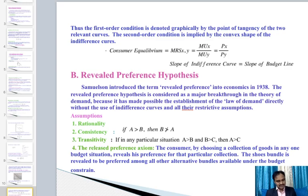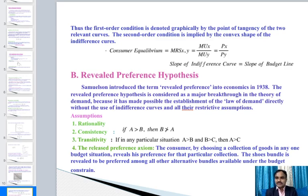The revealed preference axiom states that the consumer, by choosing a collection of goods in any budget situation, reveals preference for that particular collection. The chosen bundle is revealed to be preferred among all other alternative bundles available under the budget constraint. This implies the maximization of consumer utility.